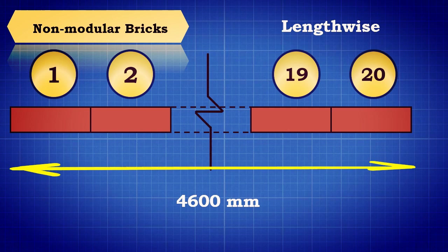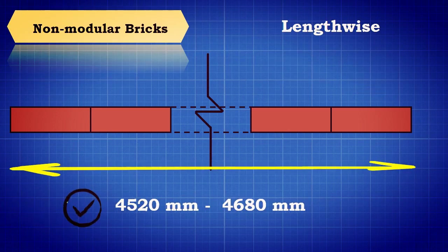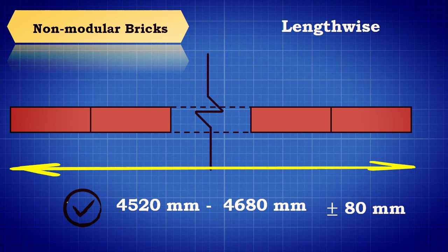In case of non-modular bricks, when placed lengthwise, it should be 4600 mm. The tolerance limit of acceptance is between 4520 mm and 4680 mm, that is plus or minus 80 mm.